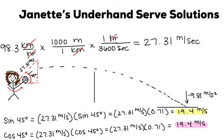To begin the calculations for the underhand serve, we took the average speed of a lollipop serve that was in kilometers per hour, which was 98.3. We converted that to meters per second, which gives you 27.31 meters per second. The sine and cosine of 45 degrees are both 0.71. You multiply that by 27.31 and you get 19.4 meters per second.